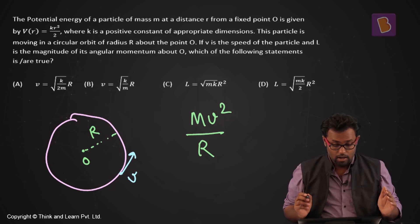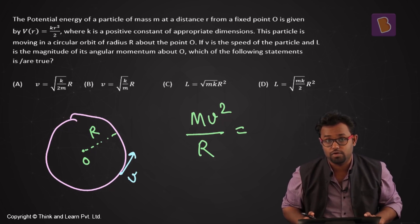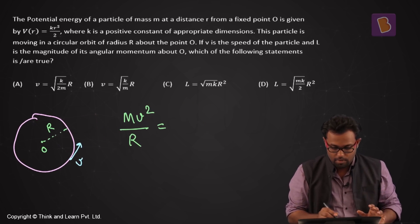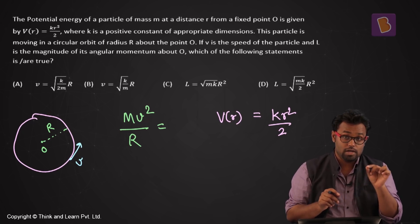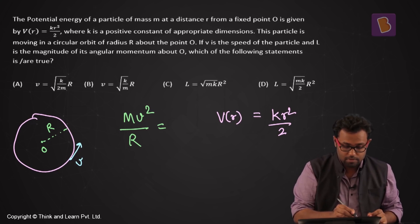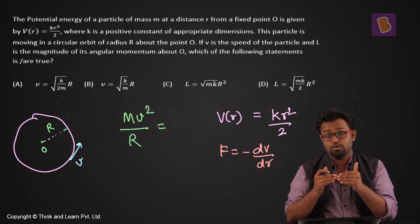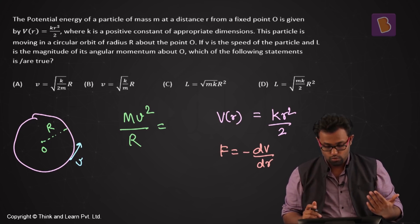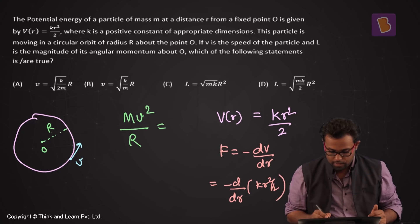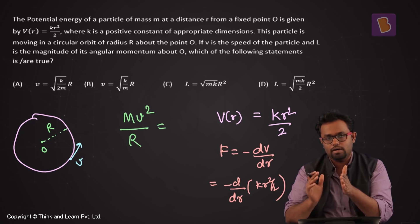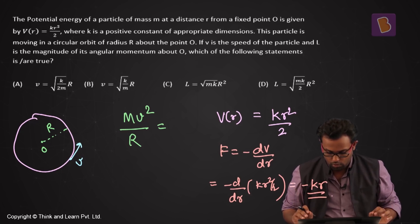What is providing the centripetal force? The question gives me potential energy V(r) = kr²/2, and there's a link between potential energy and force: F = −dV/dr. So differentiating: F = −d/dr of (kr²/2). K/2 is a constant, differential of r² with respect to r is 2r, the 2s cancel, giving F = −kr.